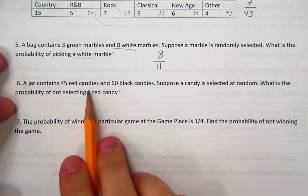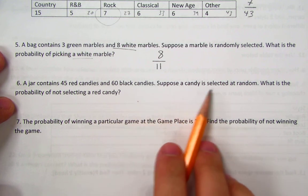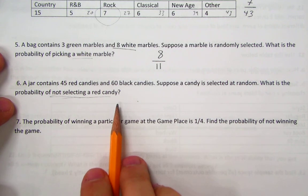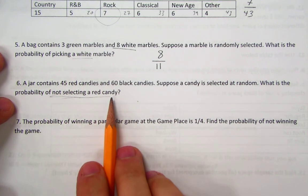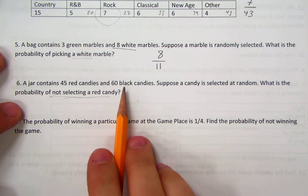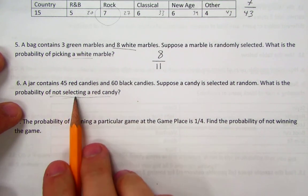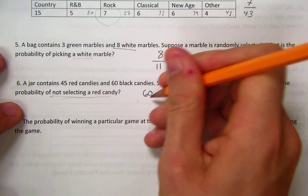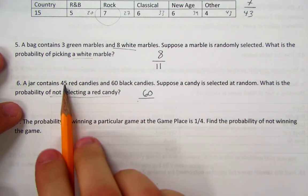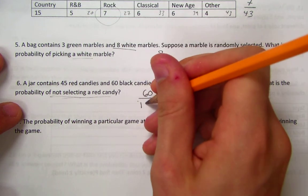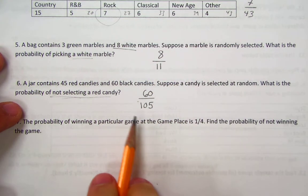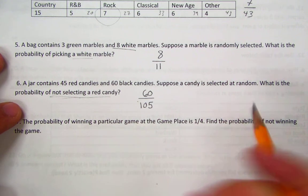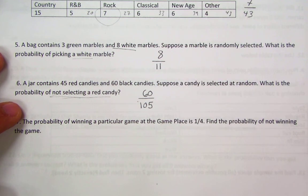Number 6: A jar contains 45 red candies and 60 black candies. Suppose a candy selected at random. What is the probability of not selecting a red candy? Here we have the probability of an event not occurring. There are two ways of doing it. You can either mentally add up the number of outcomes that are not what you're looking for. In this case, ones that are not red, there are 60, and divide that by the total number of outcomes, which in this case is 45 plus 60, 105. I should mention I had some students who added these together and got 103. Be careful with your additions. Check your work.